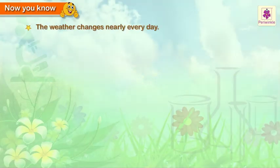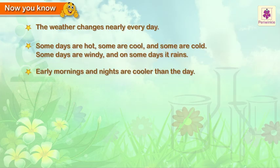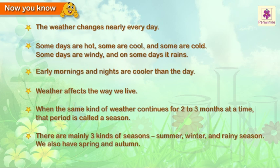Now you know that weather changes nearly every day — some days are hot, some are cool, and some are cold. Some days are windy, and on some days it rains. Early mornings and nights are cooler than the day. Weather affects the way we live. When the same kind of weather continues for two to three months, that period is called a season. There are mainly three kinds of seasons: summer, winter, and rainy season. We also have spring and autumn.